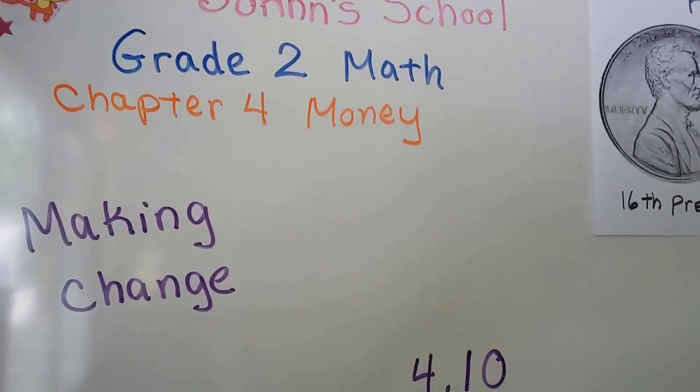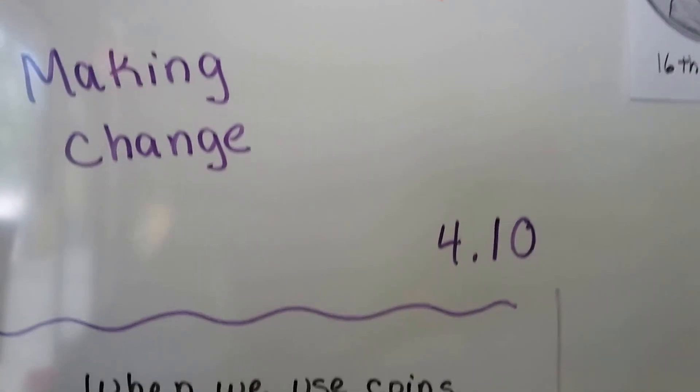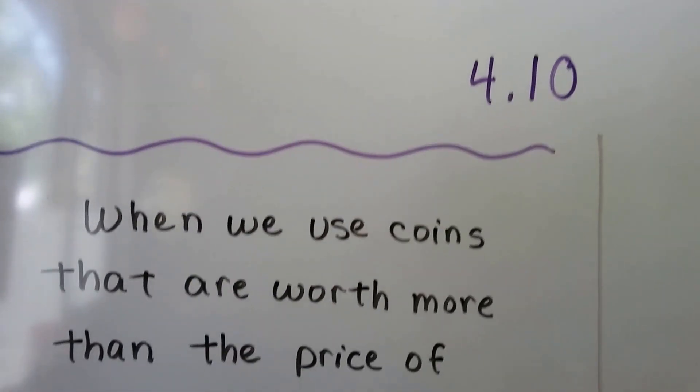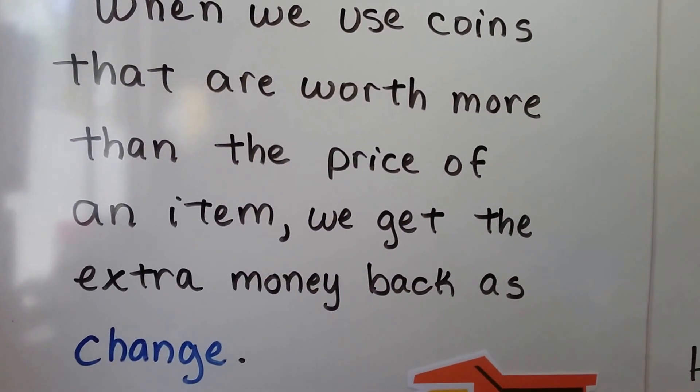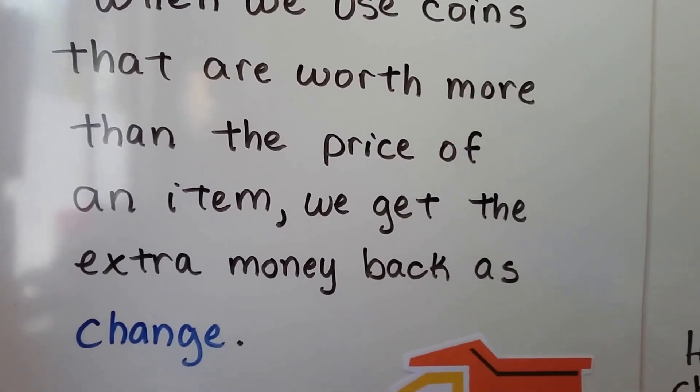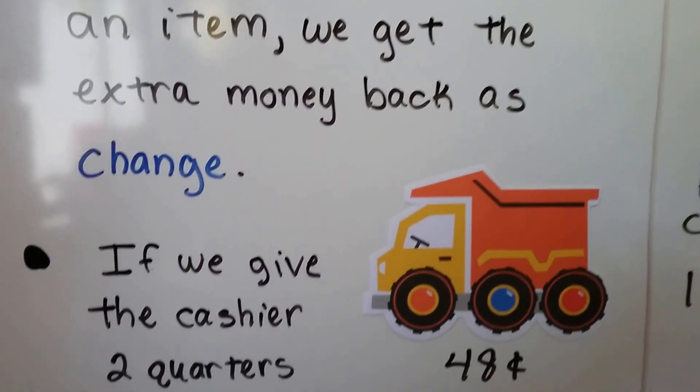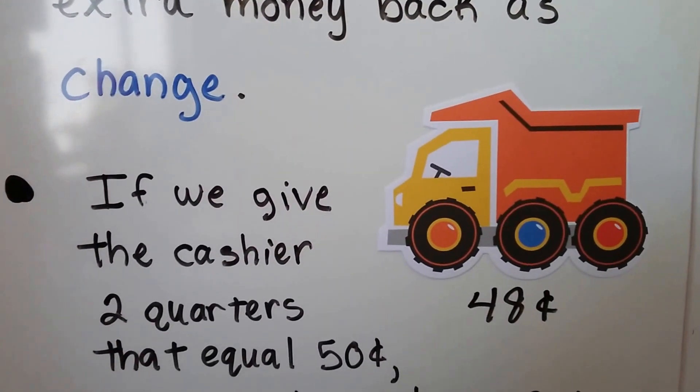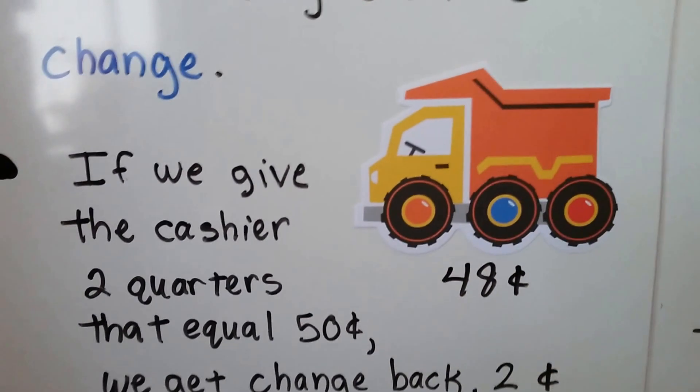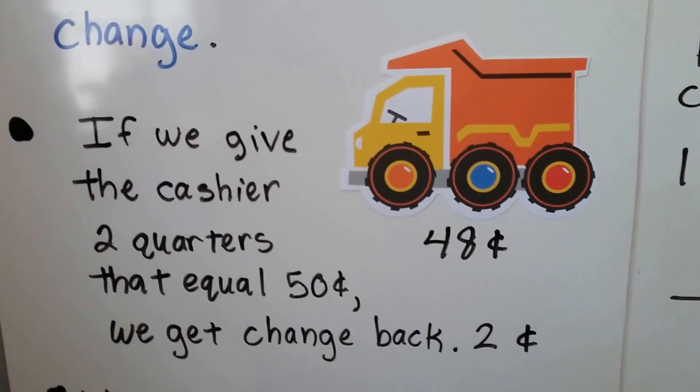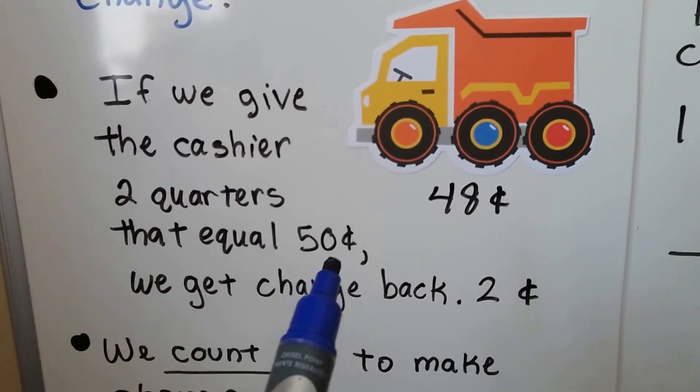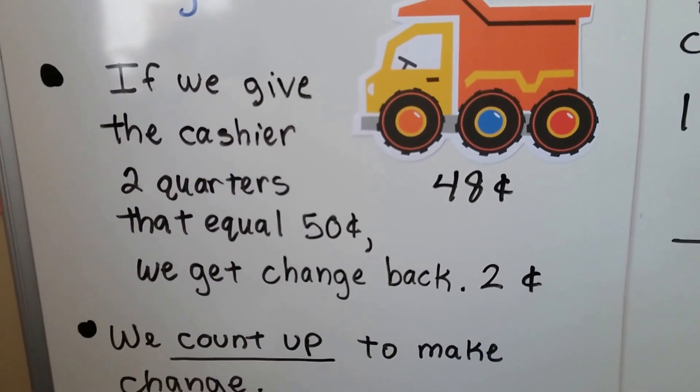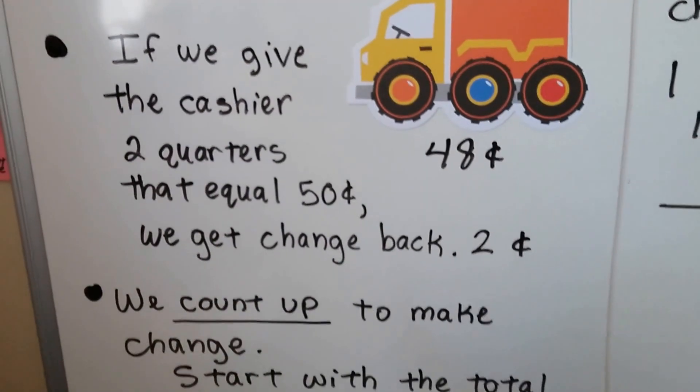Making change, lesson 4.10. When we use coins that are worth more than the price of an item, we get the extra money back as change. This little toy truck costs 48 cents. If we give the cashier two quarters that equal 50 cents, we get change back. We get two cents.